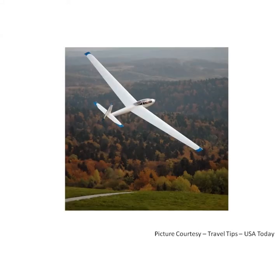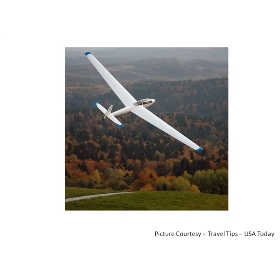This is a glider. It is a special kind of aircraft that has no engine. There are many different types of gliders. They look very much like airplanes — they have wings, a tail, a cockpit and a body. They are also called sail planes. Gliders can carry only one or two persons.